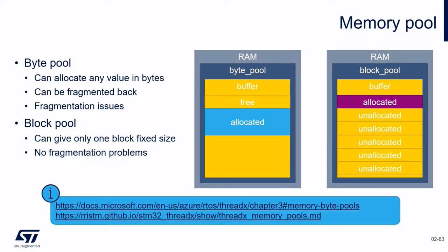We have byte pool and block pool. A byte pool is a sequence of bytes allocated in RAM, very similar to the heap in C. Typically the thread fills this pool in what is called the first-fit manner — we use the first free block of memory. If we get a memory request bigger than the available space, we will fall into fragmentation issues. So with byte pool, you can have fragmentation issues.